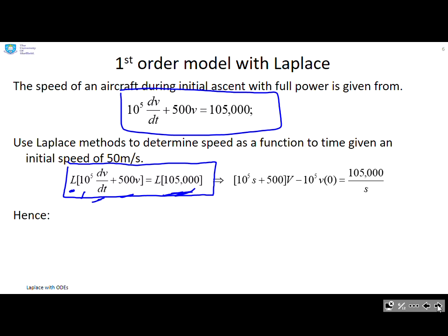So I do that and you can see I get (10⁵s + 500)·v(s) - 10⁵·v(0) = 105,000/s.